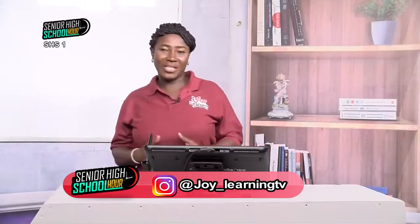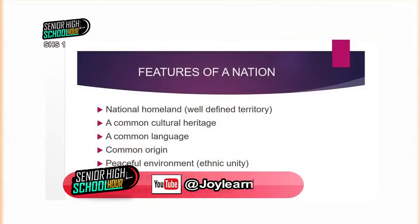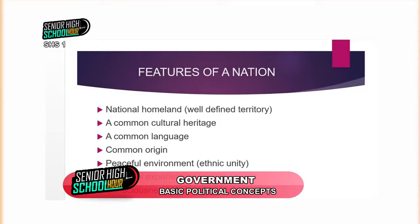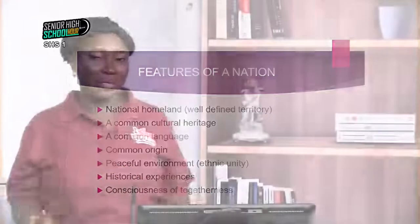Now that we know what a nation is, let's look at the features of a nation. First of all is a national homeland or a well-defined territory. The Jewish nation believes their homeland is Israel — a well-defined territory on the map. The Islamic nation relates that their homeland or native land is Mecca, which is on the globe. So one major feature of a nation is its national homeland. Another feature is a common cultural heritage — they behave and do things with regards to a specific heritage, relating to a particular ancestry and believing that is how things are to be done within that group.